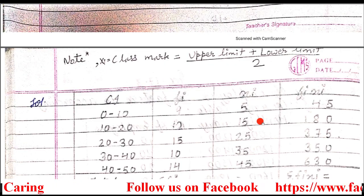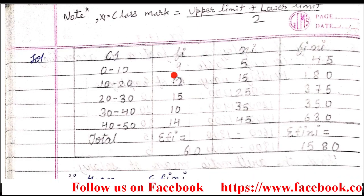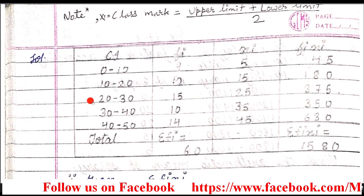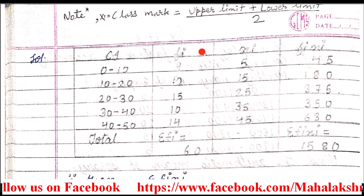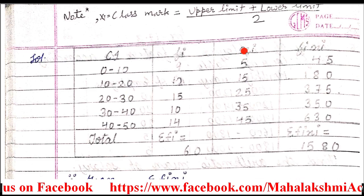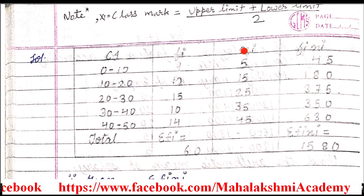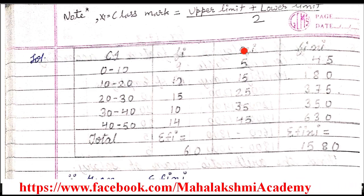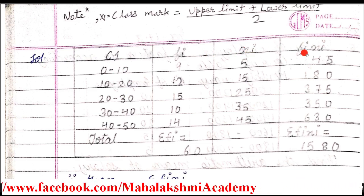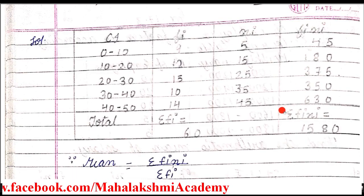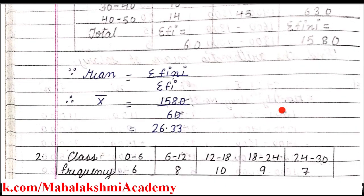This exercise is based on the grouped frequency distribution table. In this, you have to create a xi column — named as class mark — and then the procedure is the same as we had done in Exercise 17.2.